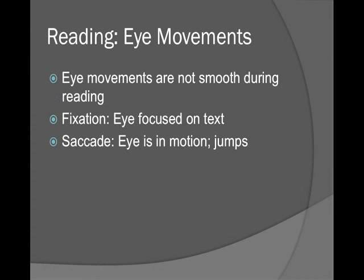When we're reading, eye movements are not like a smooth scan like a lighthouse. Instead, they are jumpy. A fixation is when our eye is focused on a piece of text, and a saccade is when the eye moves — it jumps from place to place. We're going to talk about how fixations and saccades work in reading.